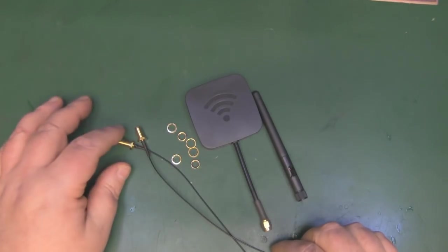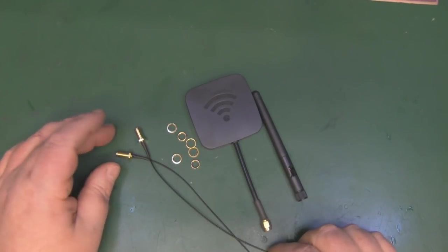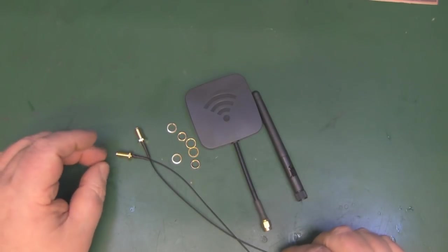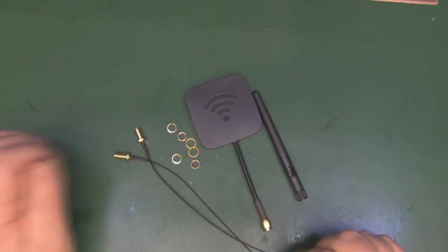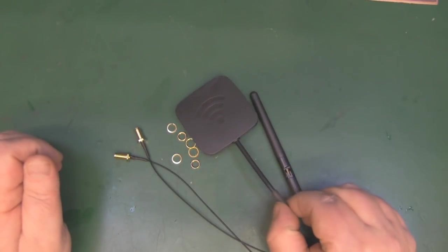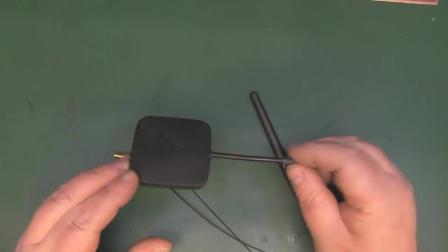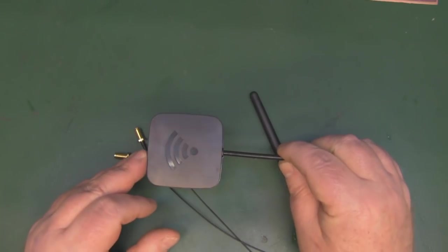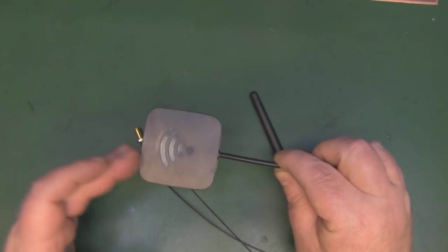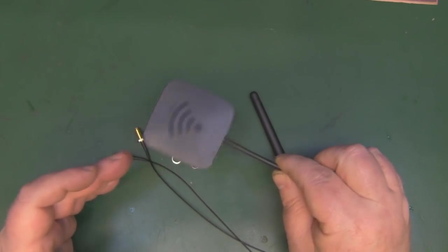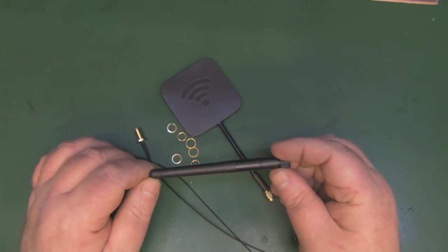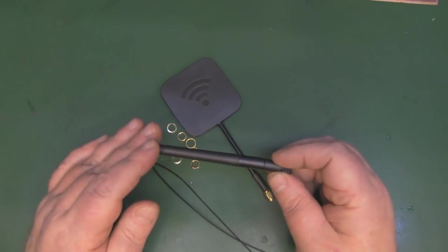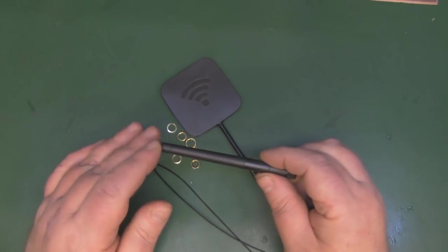You can pick these pigtails up pretty cheap off eBay. You can get around five or six of these for about one pound fifty with free shipping from China. I'm just interested in this panel antenna and whether this is 14 dBi as they claim, because if this isn't particularly good...